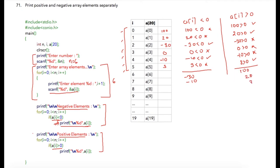Finally, 3 > 0 is true. So in this for loop, 100, 20, and 3 will be printed on the output screen. An important thing to notice is that zero was not printed by either for loop, because zero is neither positive nor negative.